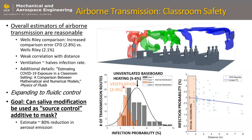Another thing we're studying is the effect of ventilation systems. This shows a distribution of all the transmission routes in a room with ventilation. We see about a 2 to 3% transmission rate under a lot of assumptions. Under the same assumptions, an unventilated room is about twice as bad. Also, infection probability in the context of the airborne route is very weakly correlated to distance, so social distancing is not that effective when focusing on the airborne route.